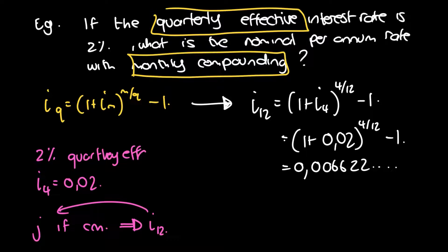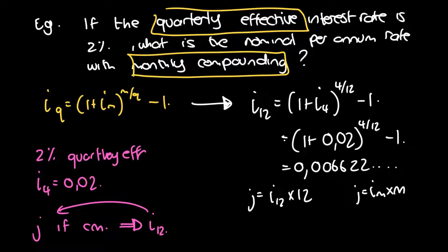But remember, we want the nominal interest rate. So J equals I12 times 12, because J equals iM times M. Multiplying 0.006622 et cetera by 12 gives 0.0794 et cetera.